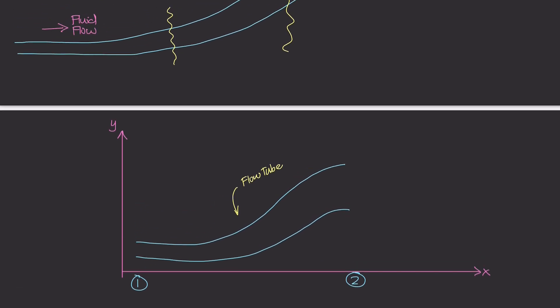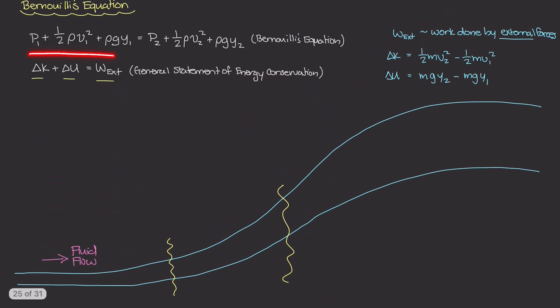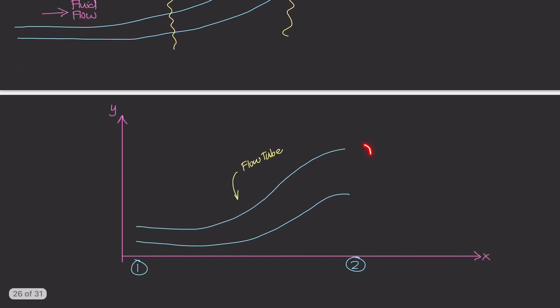This is going to be our system for coming up with Bernoulli's equation, and this is where we're going to study the energy analysis. So we're going to apply this general statement of energy conservation to this tiny piece of the system, or this flow tube, and this is going to help us derive Bernoulli's equation. So I'll do that in the next video.